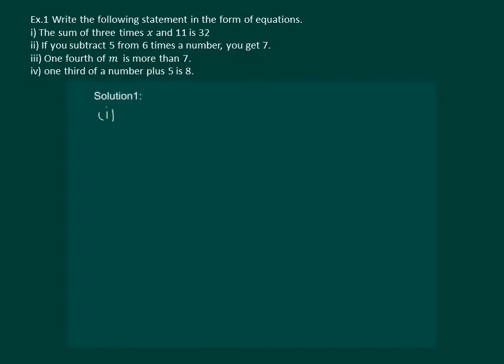Let us read it again. The sum of 3 times x - 3 times x means 3x - and 11, sum of 3x plus 11 is 32. And this is the required equation.